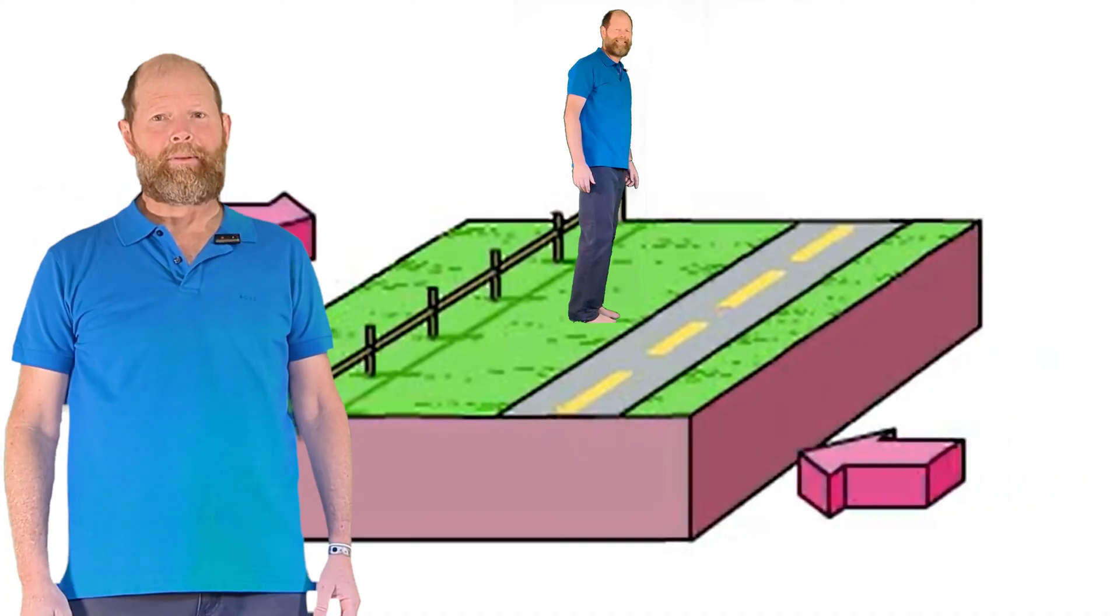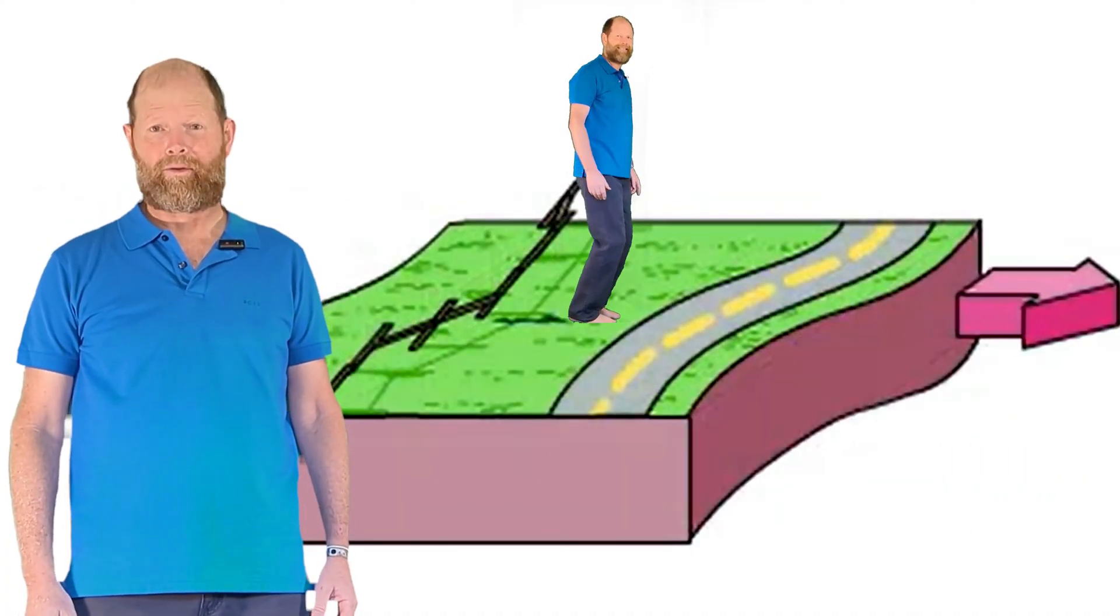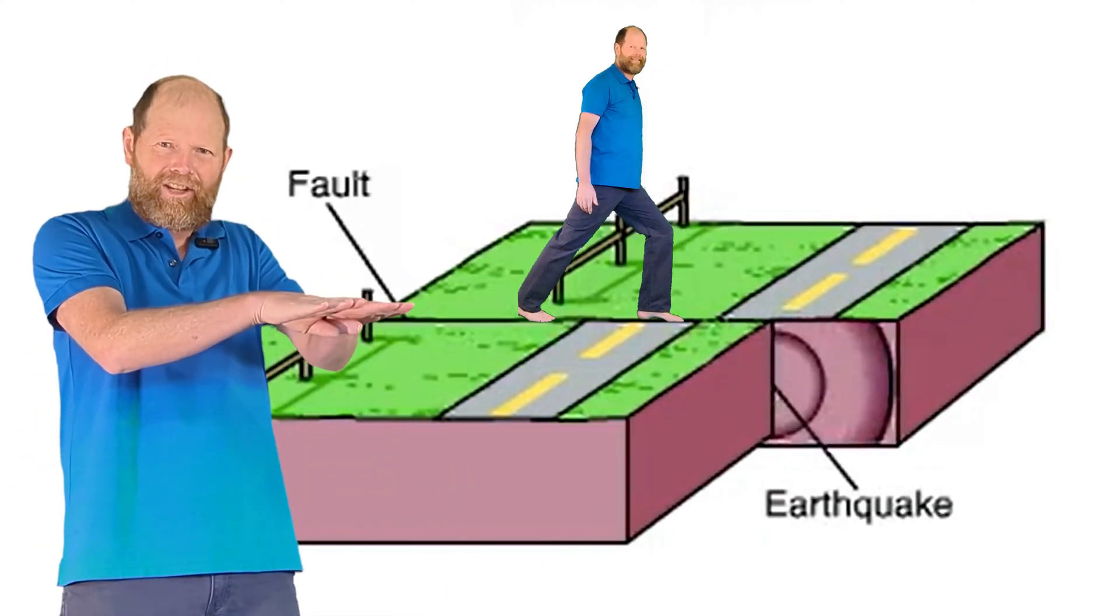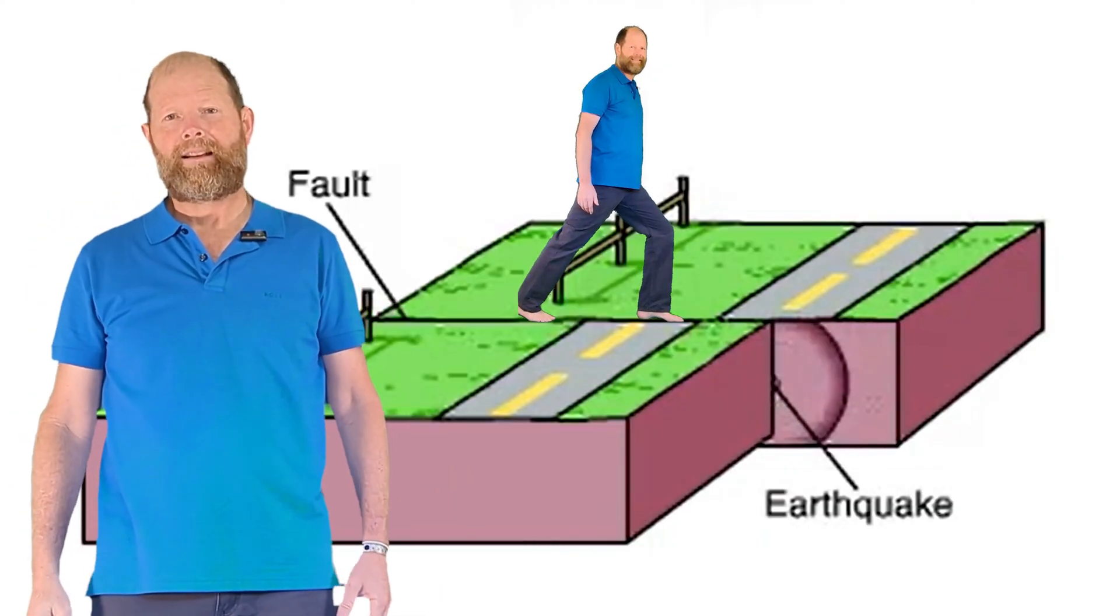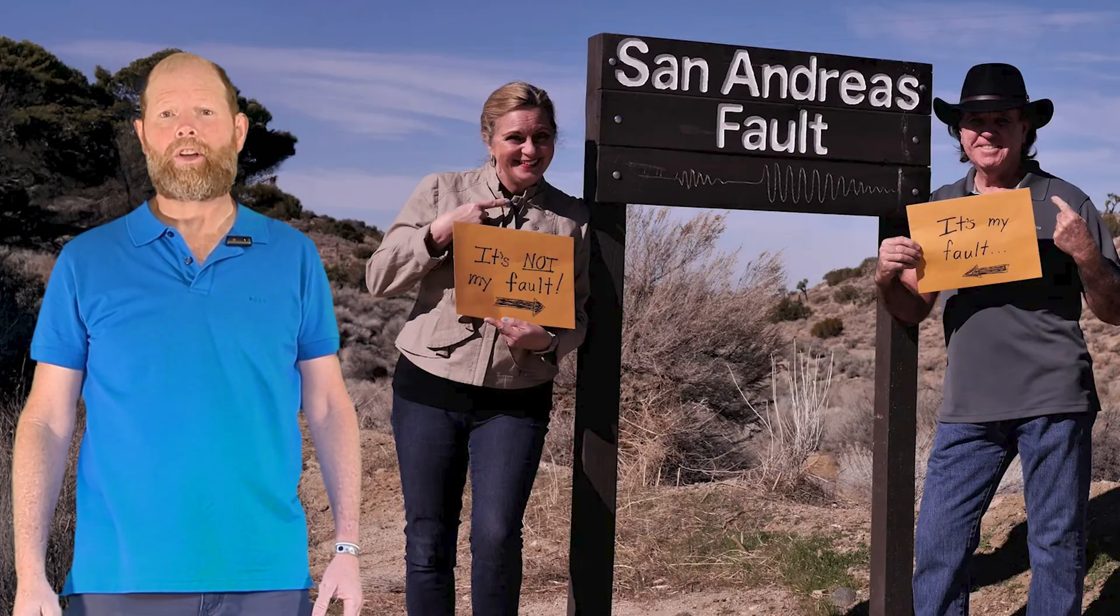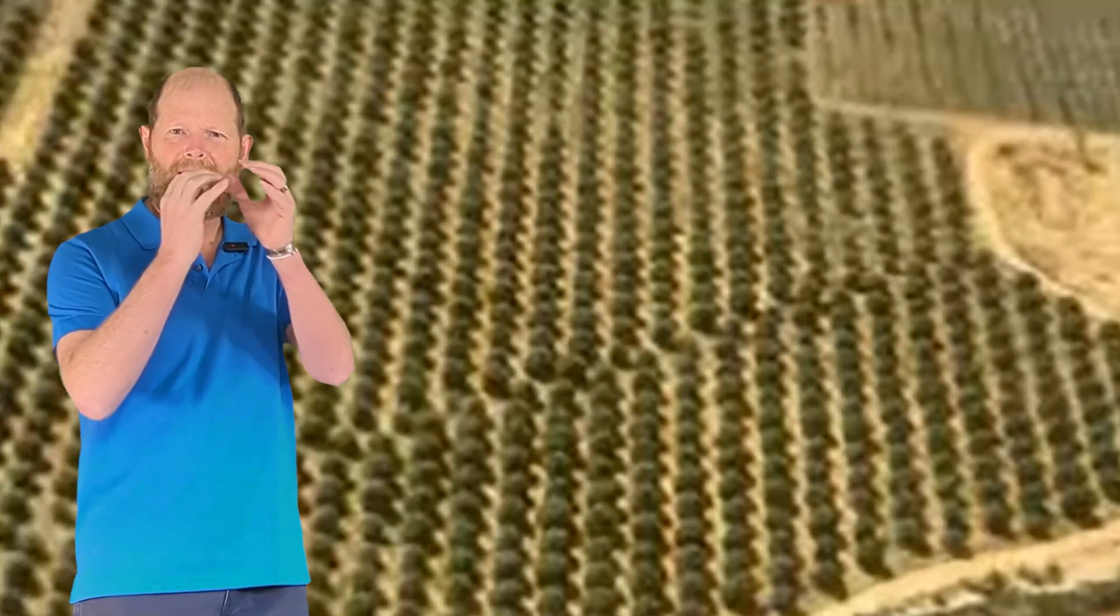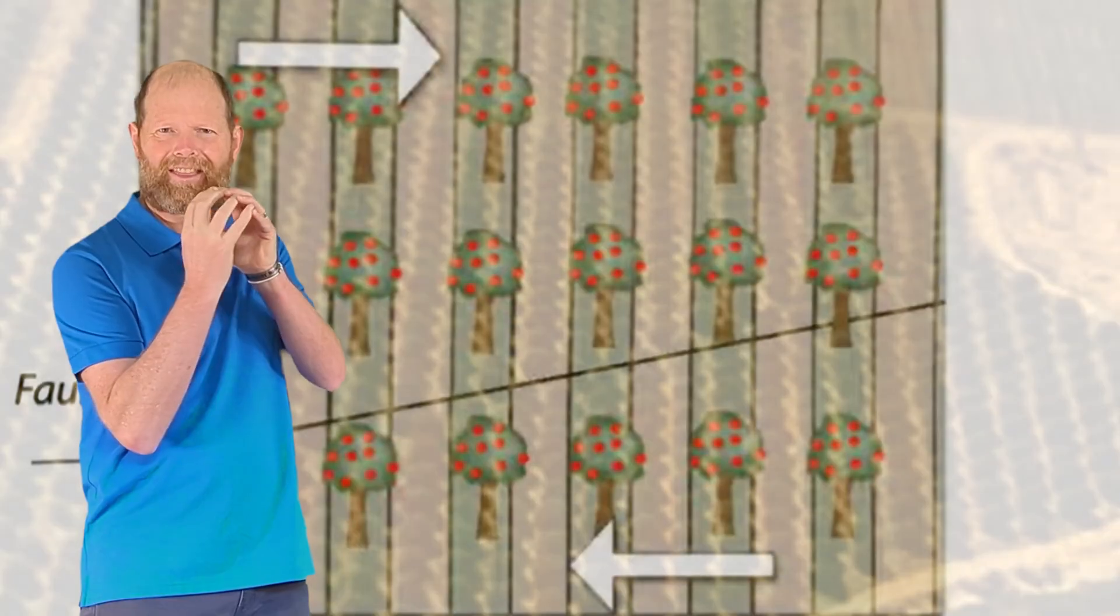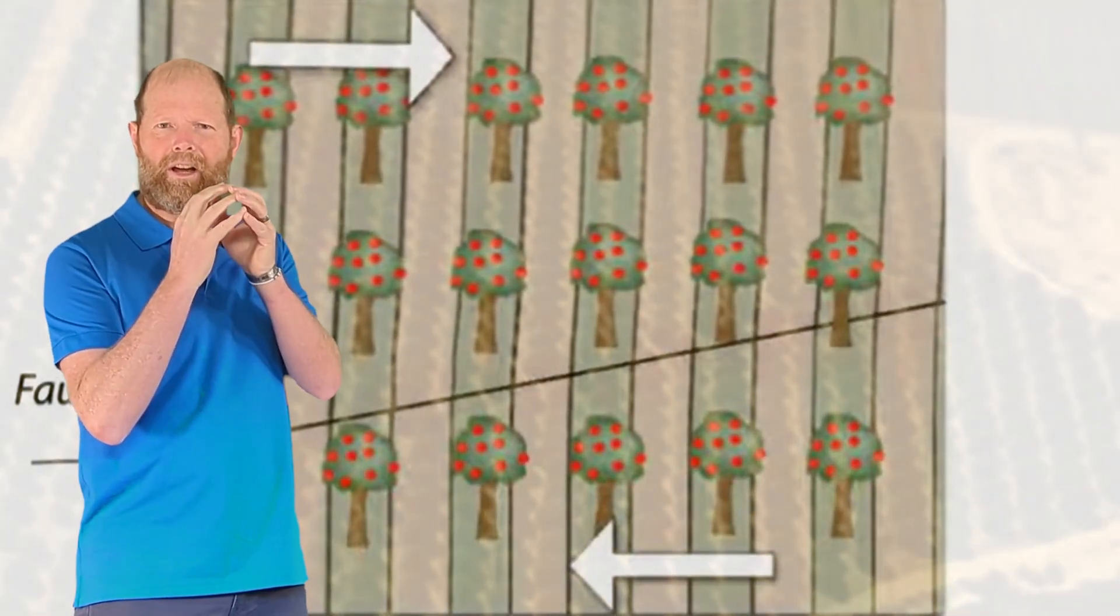The third type of plate boundary is transform boundaries, where plates slide horizontally past each other. This can cause earthquakes, like those along the San Andreas Fault in California. When plate boundaries try to slide past each other, there is tremendous friction between them. This causes them to catch and stick for thousands of years. When this happens, the rest of the plate continues to move.